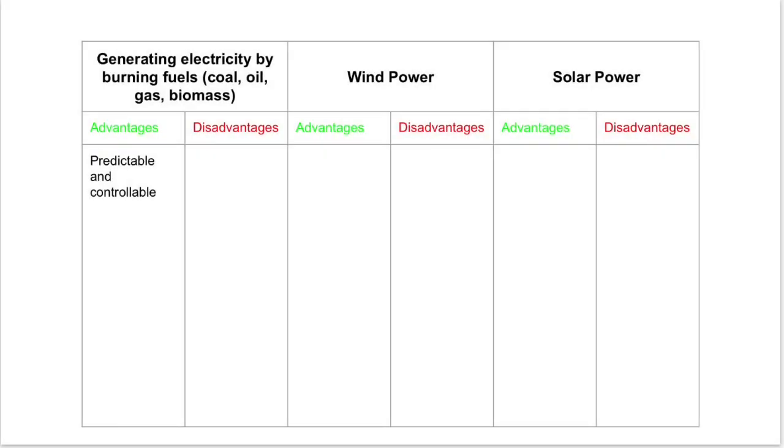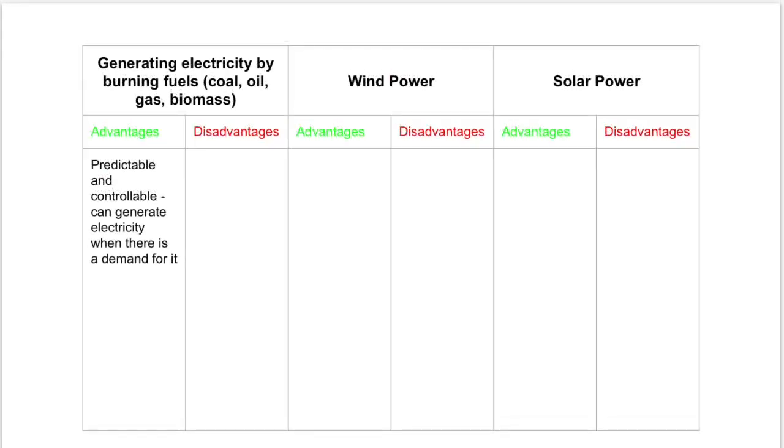First of all, think about when you burn fuels. When you want to light them, you can do it anytime you want. Is it always windy though? Is it always sunny? Nope. Therefore, an advantage of burning fuels is that they are predictable and controllable, meaning that you can do it when you want. This means you can generate electricity when there is demand for it.